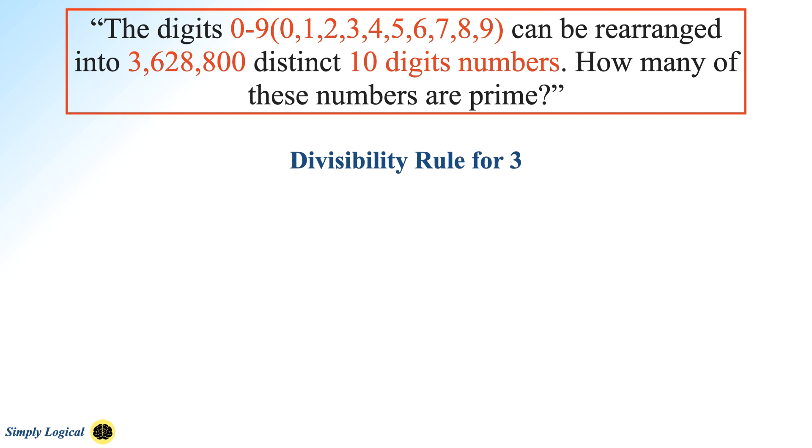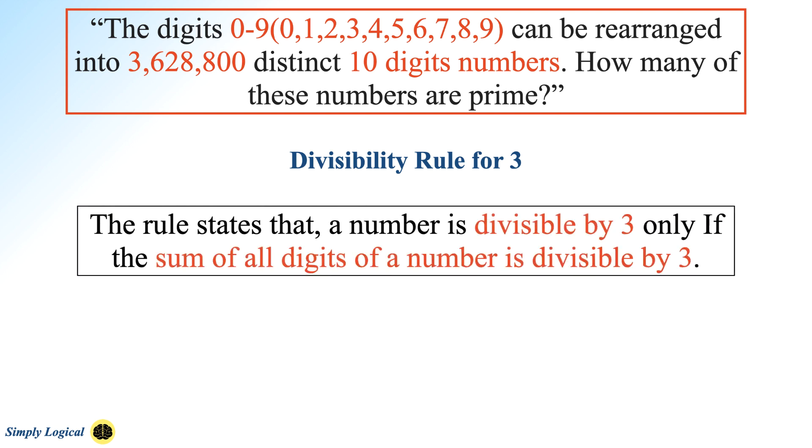The rule states that a number is divisible by 3 only if the sum of all the digits in the number is divisible by 3. For example, 123 is divisible by 3 because the sum of all the digits in the number is 1 plus 2 plus 3, which is equal to 6, and 6 is divisible by 3, hence 123 is also divisible by 3.